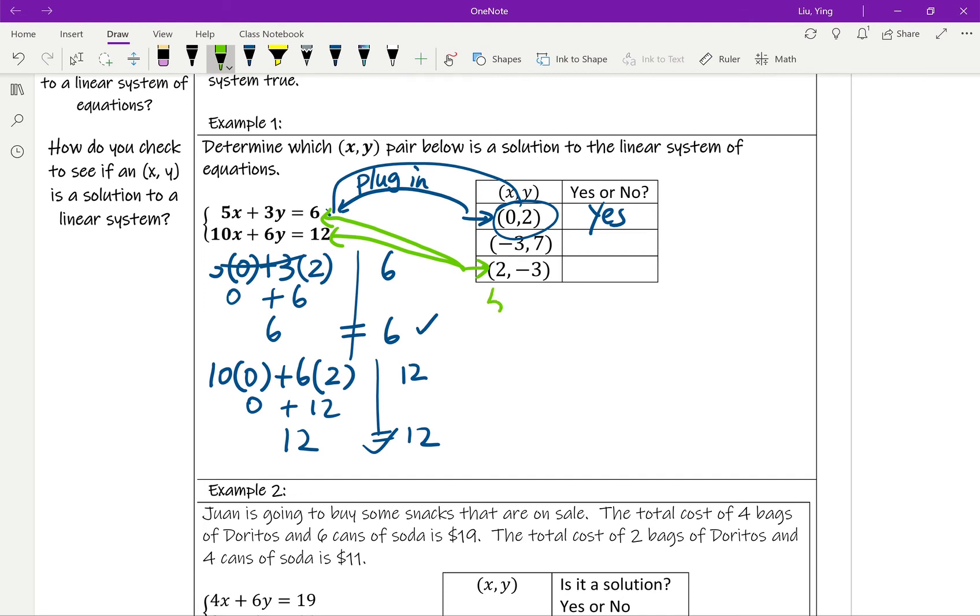So 5 times, x is 2 this time, plus 3 times y. y is negative 3 this time. And we want to see if that is going to be the same. So 5 times 2 is 10. 3 times negative 3 is negative 9. If we add them, that's going to be positive 1.